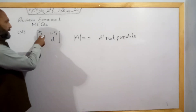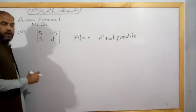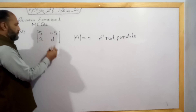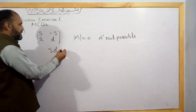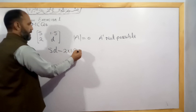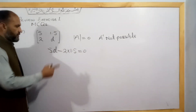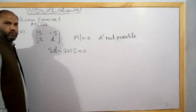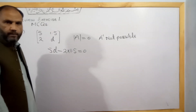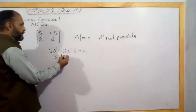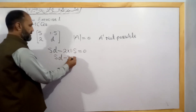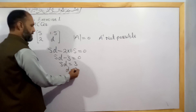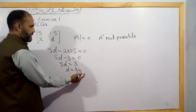If the determinant is zero, we calculate the D value. The determinant gives us 5 times D minus 2 times 1.5 equals zero. That is 5D minus 3 equals zero, so 5D equals 3, giving D equals 3 over 5, which equals 0.6.